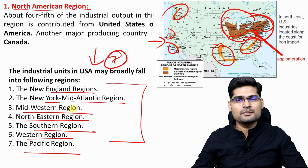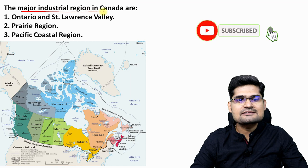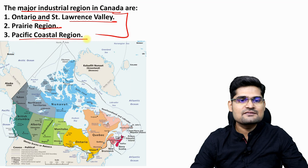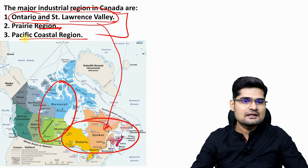The major industrial regions in Canada are three: Ontario and St. Lawrence Valley in the east, the Prairie region in the central portion, and the Pacific Coastal region towards the Pacific. These are the three major centers or hubs of industry in Canada.